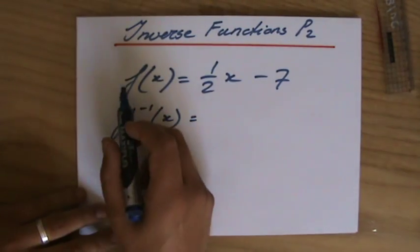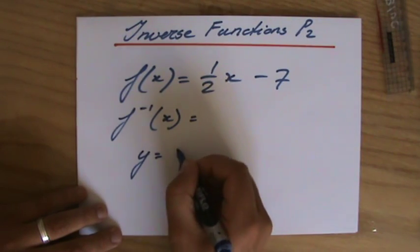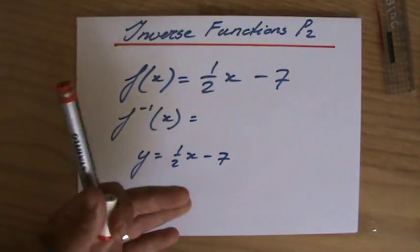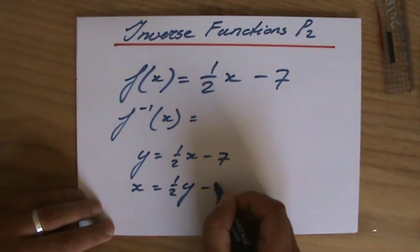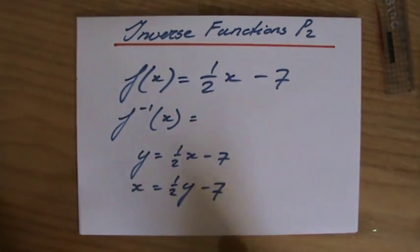Now, how do I approach this question? Rather than f(x), I'm going to say y equals (1/2)x - 7. Then I swap x and y. So x equals (1/2)y - 7. And then I rearrange that equation to make y the subject again.